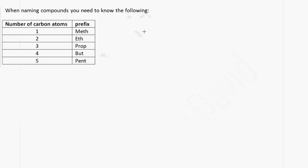When naming organic compounds, you need to remember: if an organic compound contains one carbon atom, the prefix is METH; two carbon atoms — ETH; three carbon atoms — PROP; four carbon atoms — BUT; five carbon atoms — PENT.